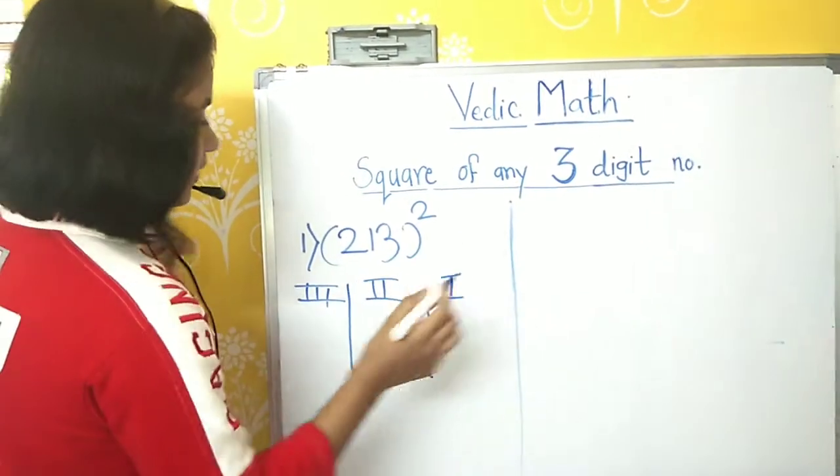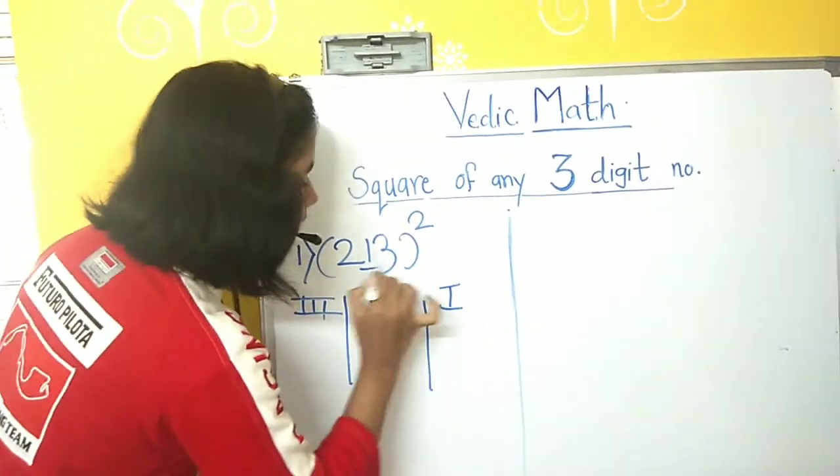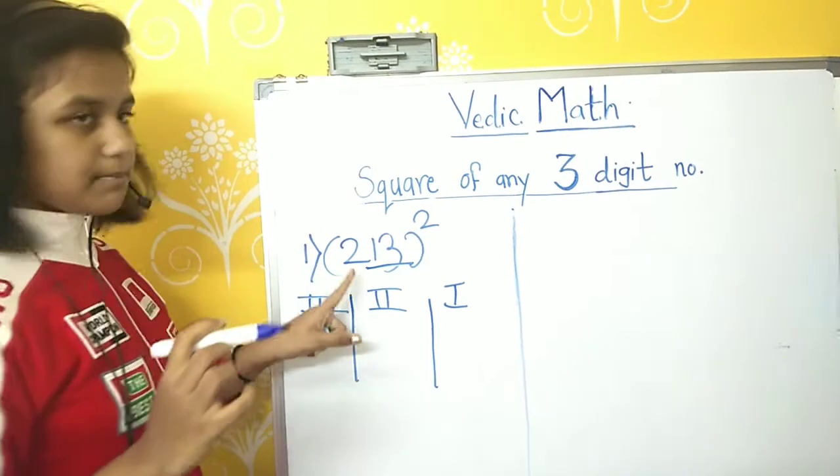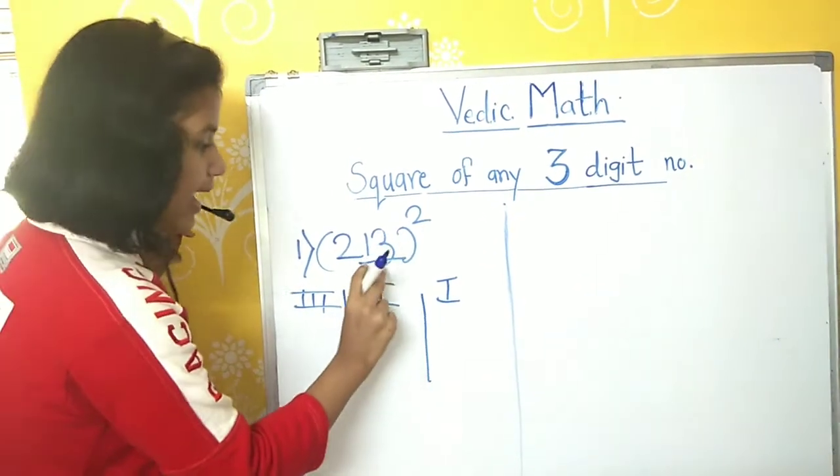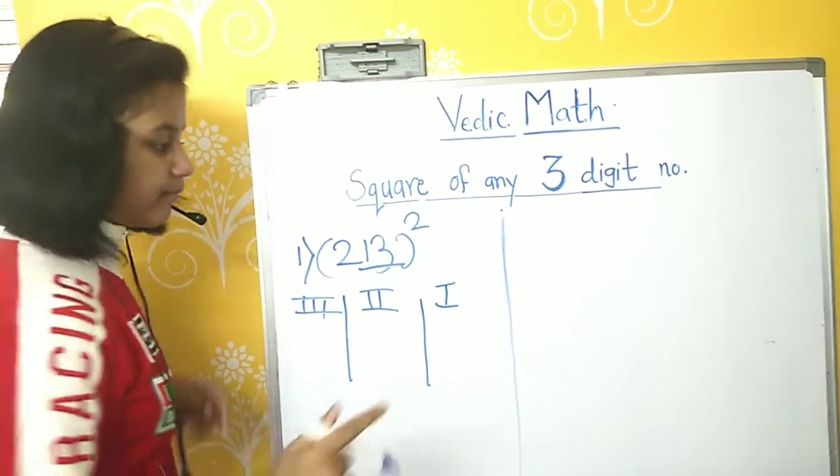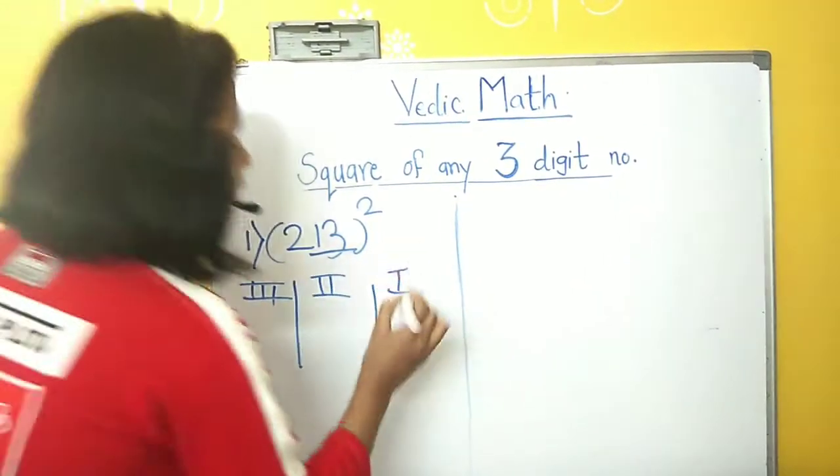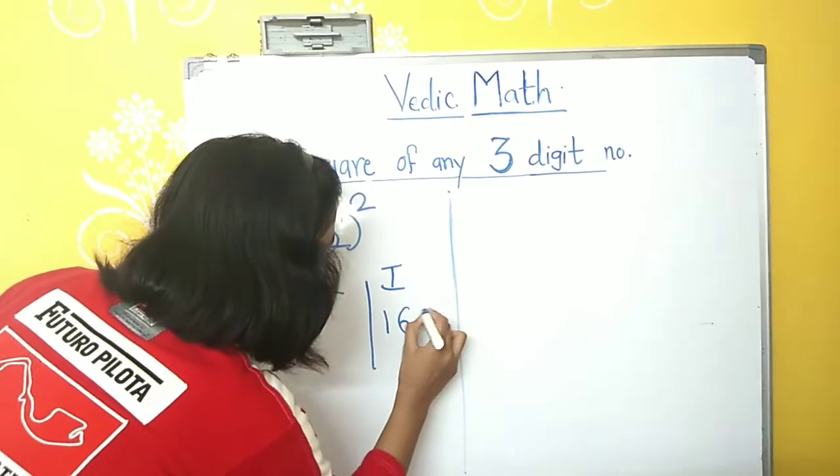In the first step, we will square the two ending digits in the number. The two digits which are in the end, we will square them, which will be 13 square, which is 169.